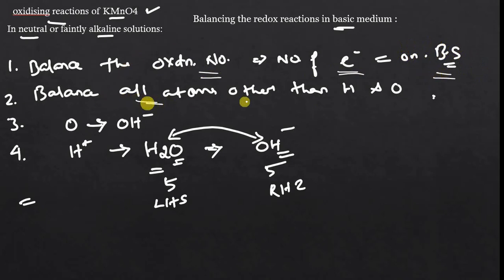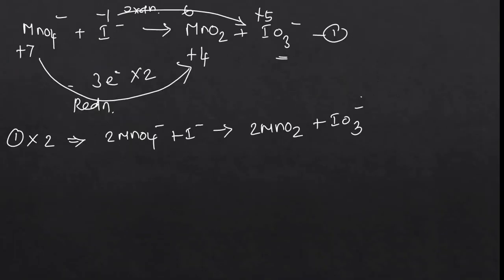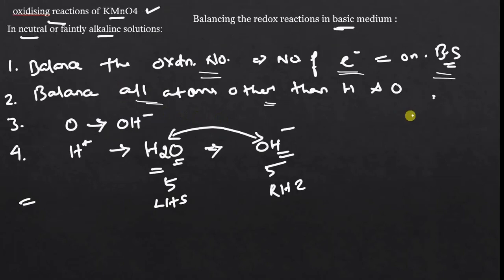Next: balance all atoms other than hydrogen and oxygen. Apart from hydrogen and oxygen, the atoms here are Mn and Iodine. We have 2 Mn on the left and 2 Mn on the right, and 1 Iodine on each side. So all atoms other than hydrogen and oxygen are already balanced.